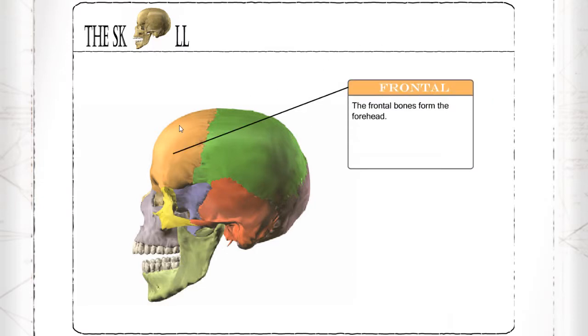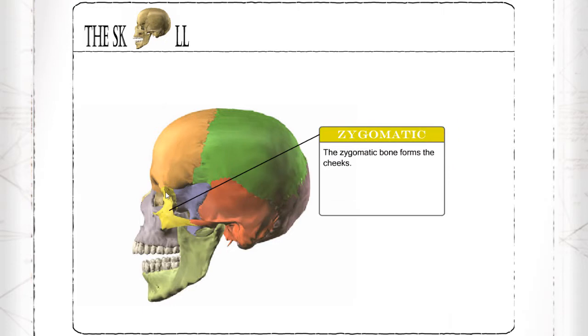Frontal: the frontal bone forms the forehead. Zygomatic: the zygomatic bone forms the cheeks.